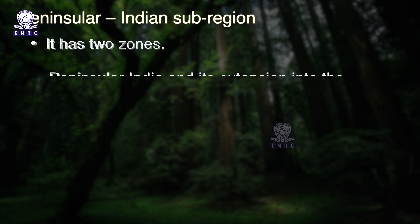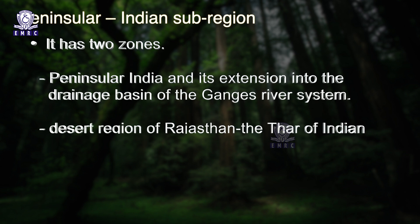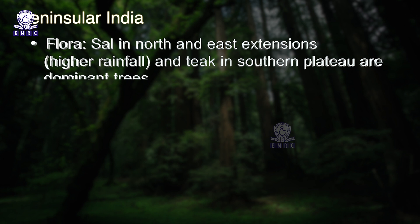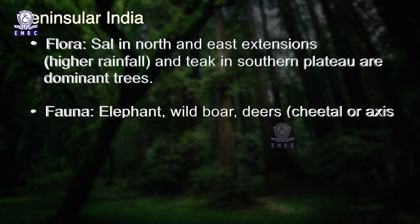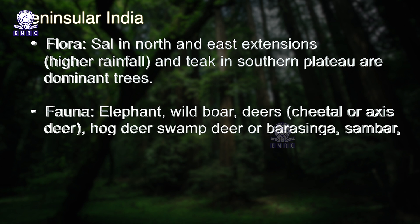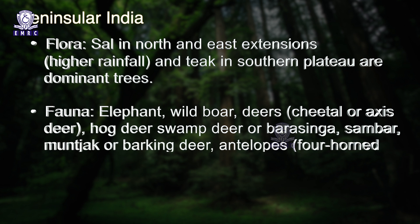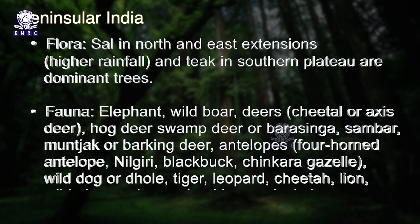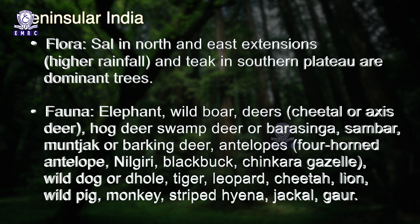The peninsular region covers peninsular India and its extension into the drainage basin of the Ganges River and the desert region of Rajasthan — the Thar. Peninsular India is home to tropical moist deciduous to tropical dry deciduous and scrubbed vegetation depending on variation in rainfall and humidity. Flora: sal in the north and east and teak in the southern plateau are dominant trees. Fauna includes elephant, wild boar, various deer species (chital, hog deer, swamp deer, sambar, muntjak), antelopes (four-horned antelope, nilgai, blackbuck, chinkara, gazelle), wild dog (dhole), tiger, leopard, cheetah, lion, wild pig, monkey, striped hyena, jackal, and gaur.